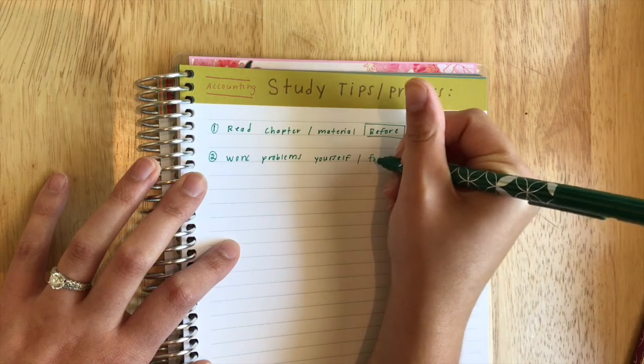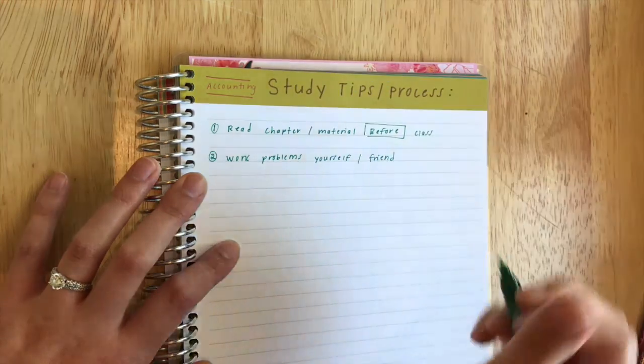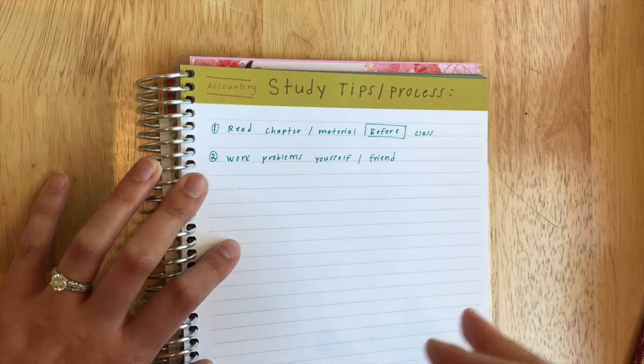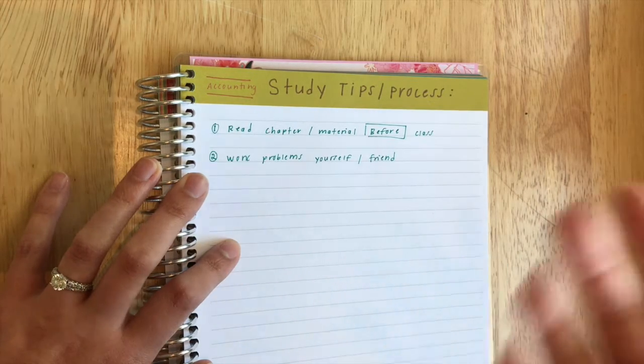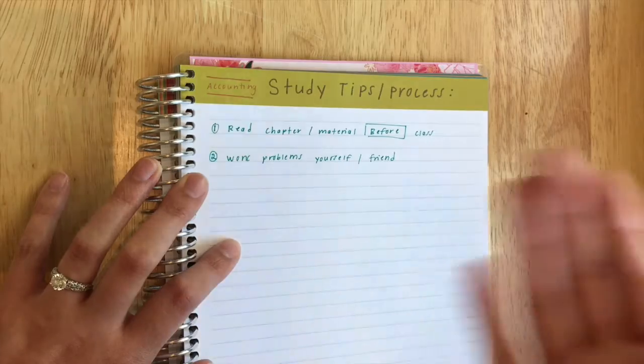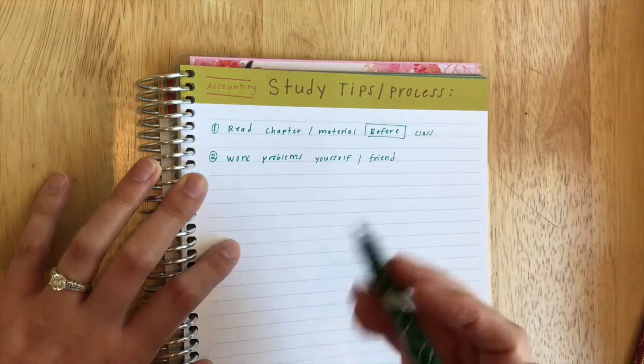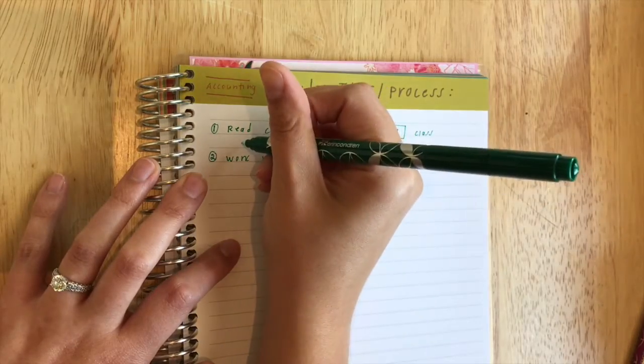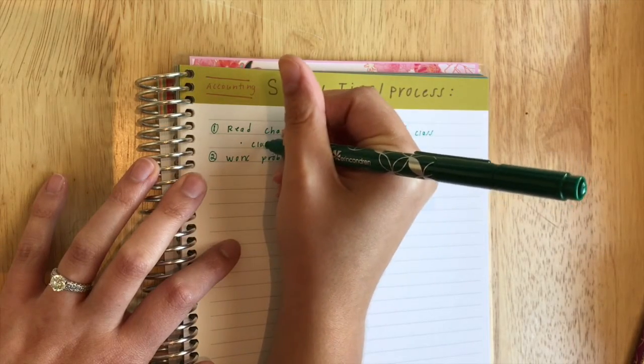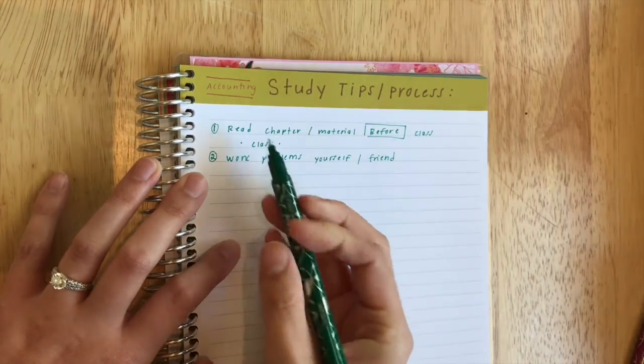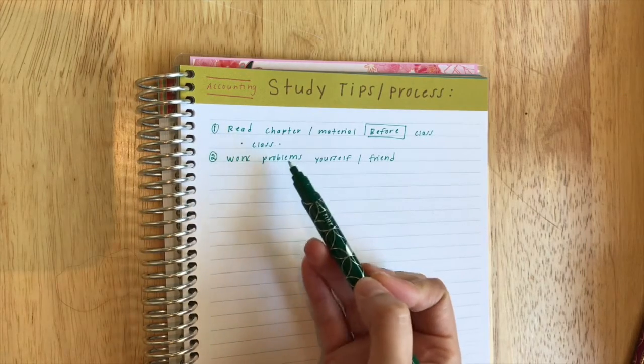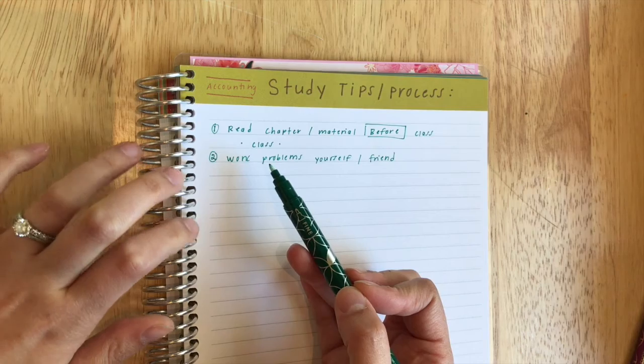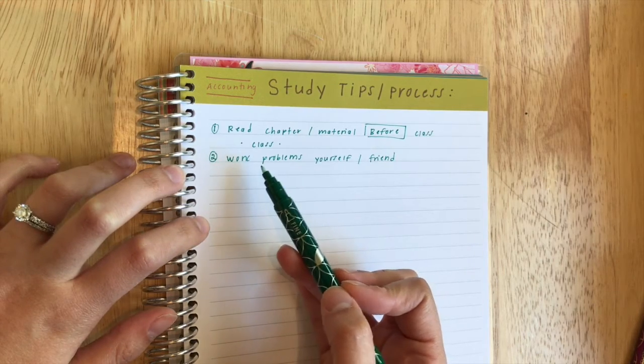That is another point to the second tip, which is to either do it by yourself, which I sometimes like to do homework by myself, or do it with a friend or classmate. For me, doing it with a friend helped me because if I had any questions usually my friend could help me understand it or vice versa. In between I should just put 'class' just so that you know - you want to read before class and then you want to really focus on the problems after your class.